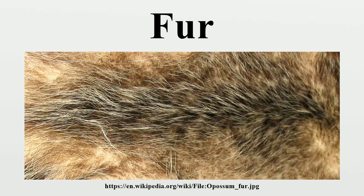Composition. Fur usually consists of two main layers. Down hair: the bottom layer consisting of wool hairs, usually wavy or curly without straight portions or sharp points. Down hairs tend to be shorter, flat, curly, and more numerous than the top layer. Its principal function is thermoregulation — it maintains a layer of dry air next to the skin and repels water, thus providing thermal insulation.